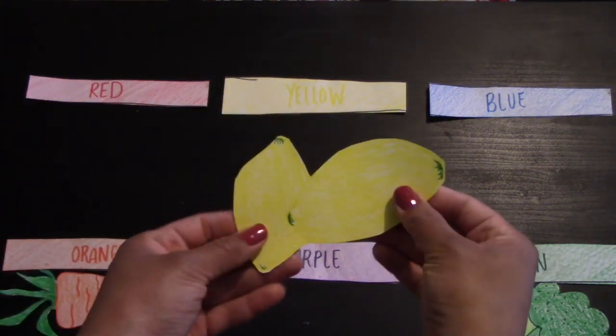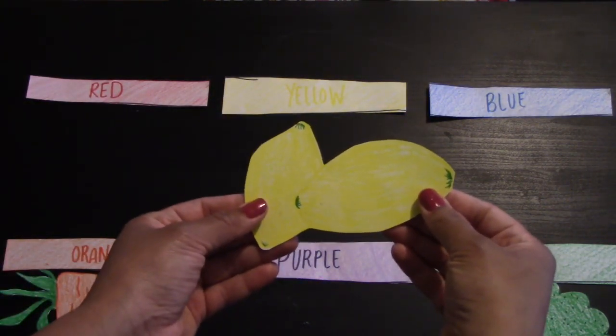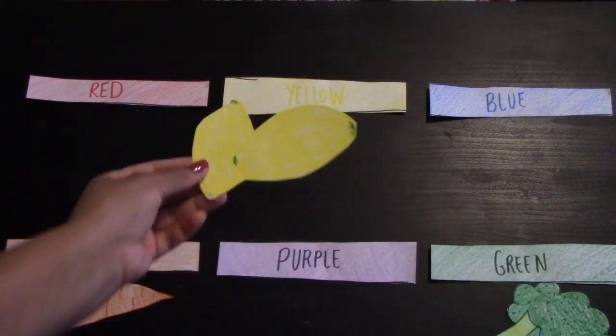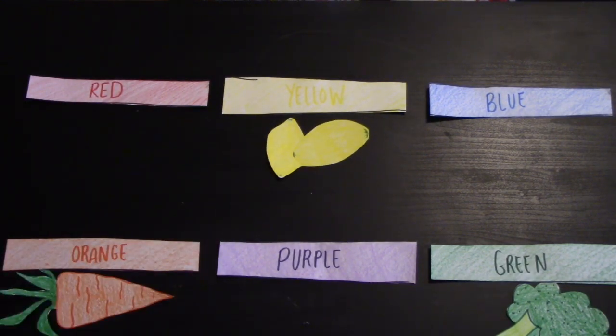What about the lemons? Yellow. The lemons are yellow, one of our primary colors.